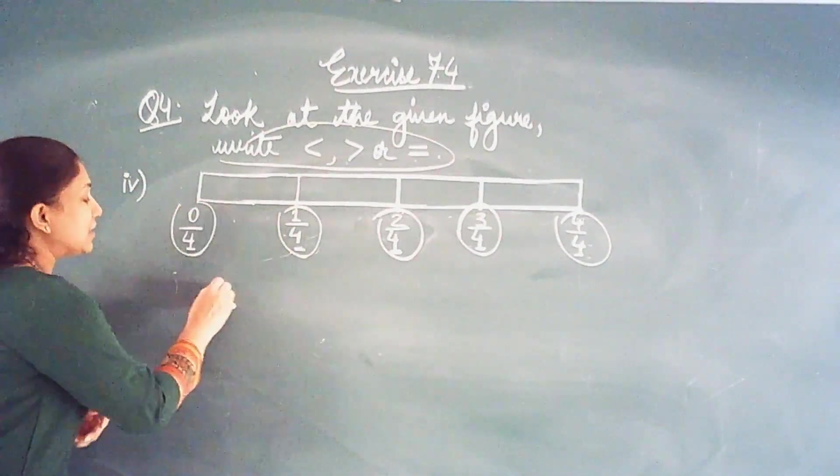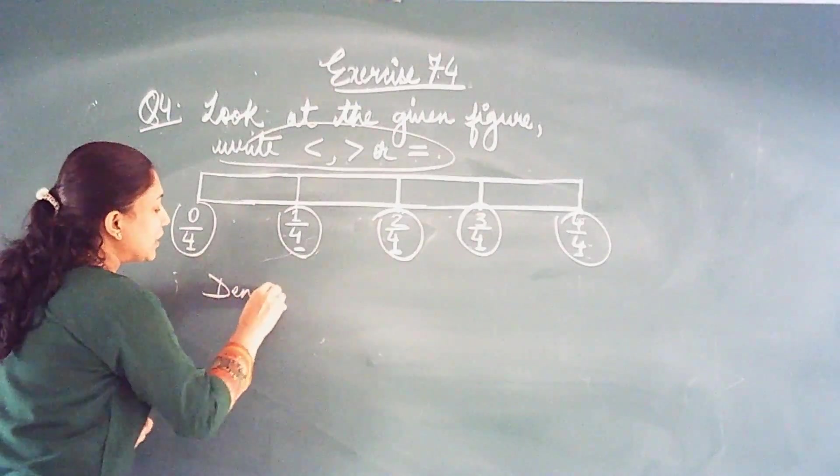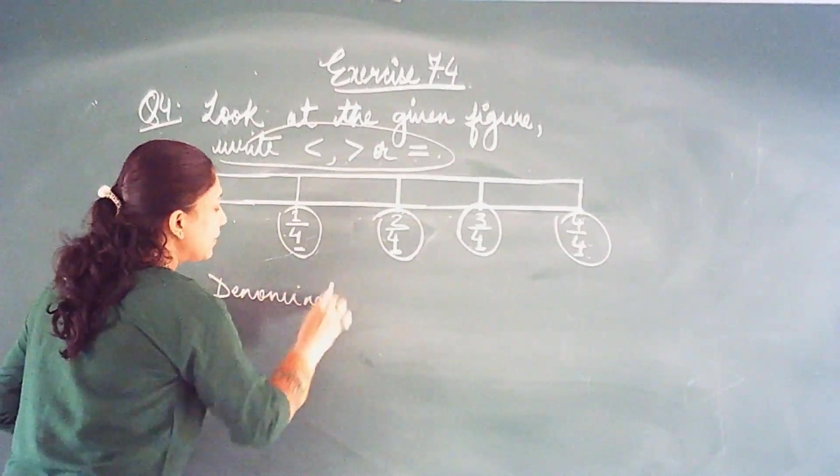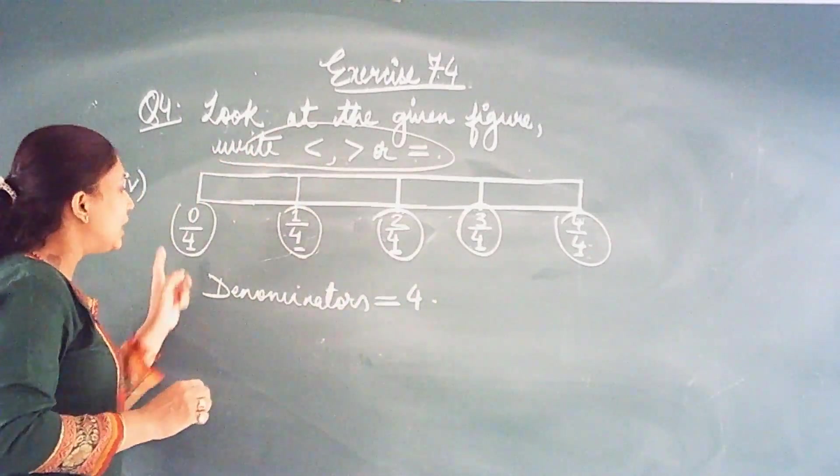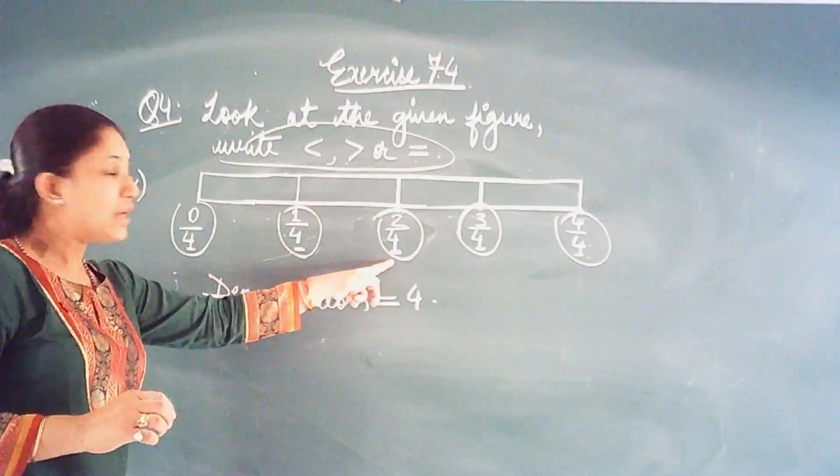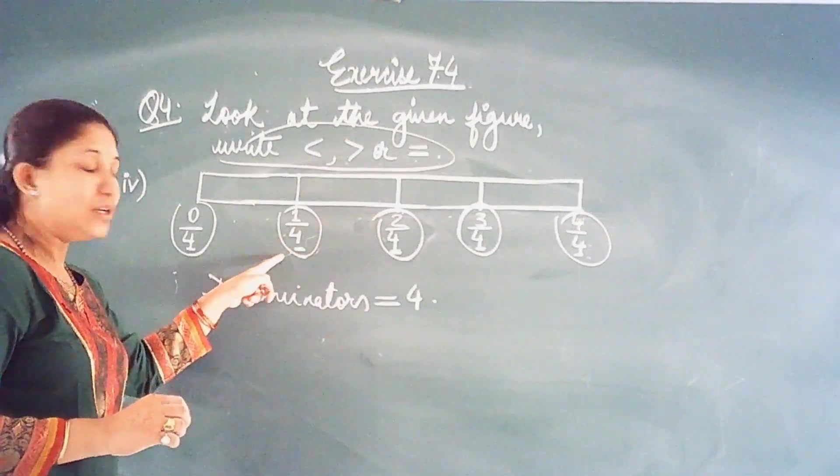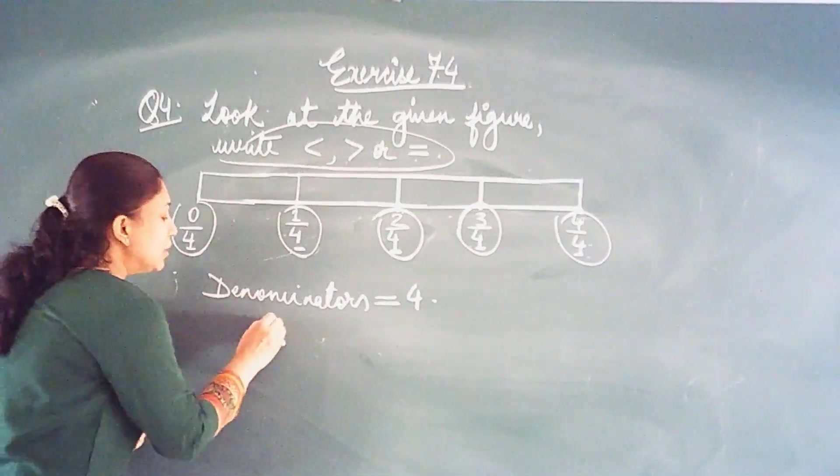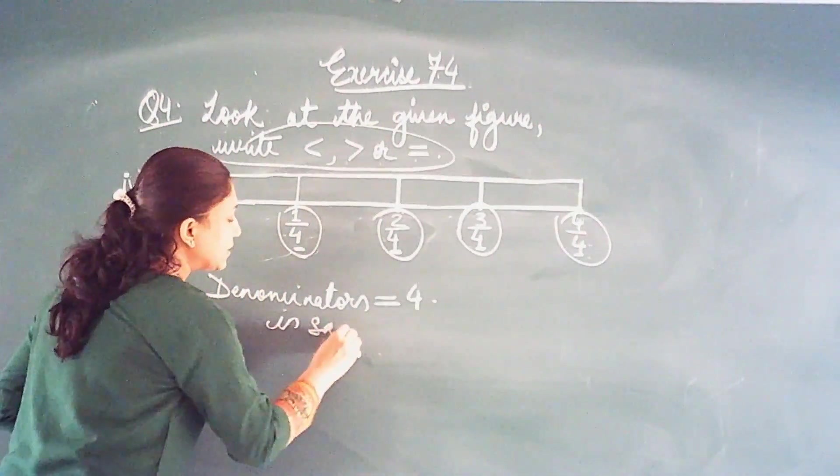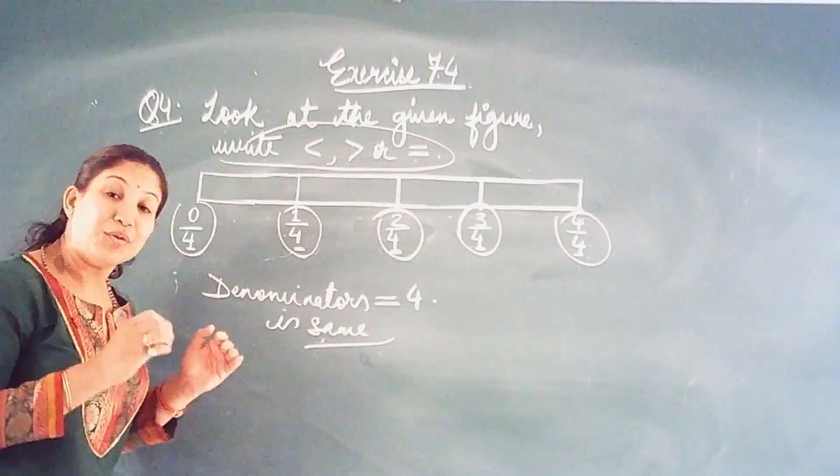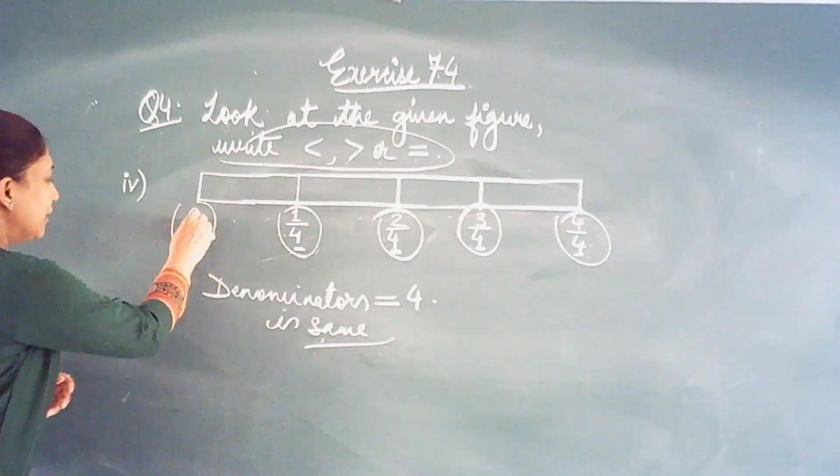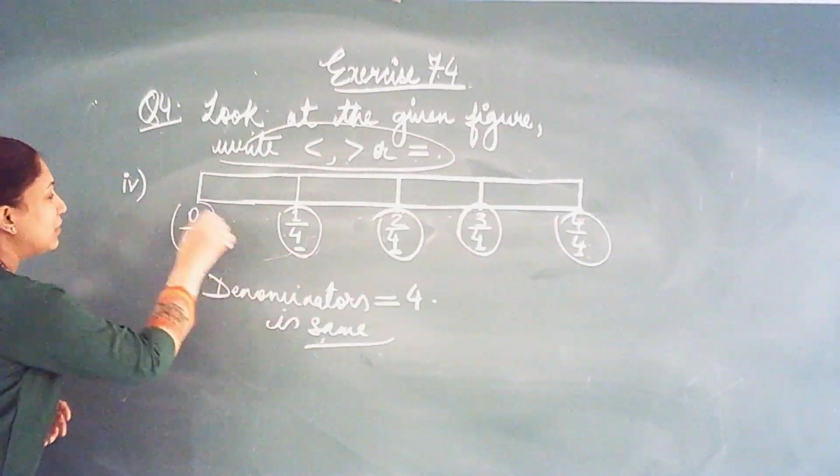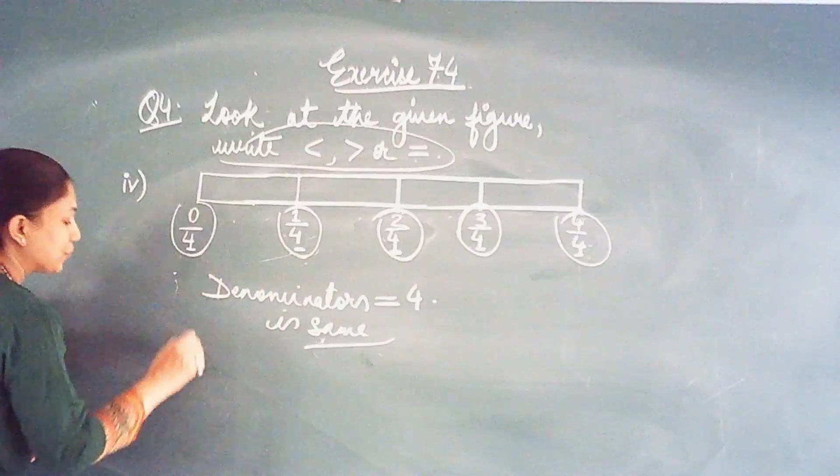So when we see the given figure and check the fractions we see that the denominators of the given fractions are same. The denominator, each denominator is having 4 in it. So denominator is same. So when denominator is same, then it is so easy to compare. What do we do? Let us see. When denominator is same, check the numerator.